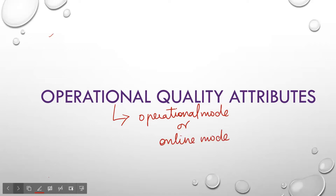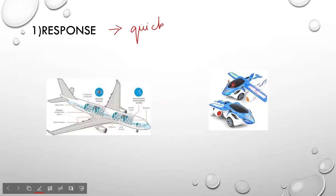Now let us look at the characteristics one by one. The first one is response. Response in short can be called as quickness. Now let us take an example. You have a flight control system and you have an embedded system for this flight control.